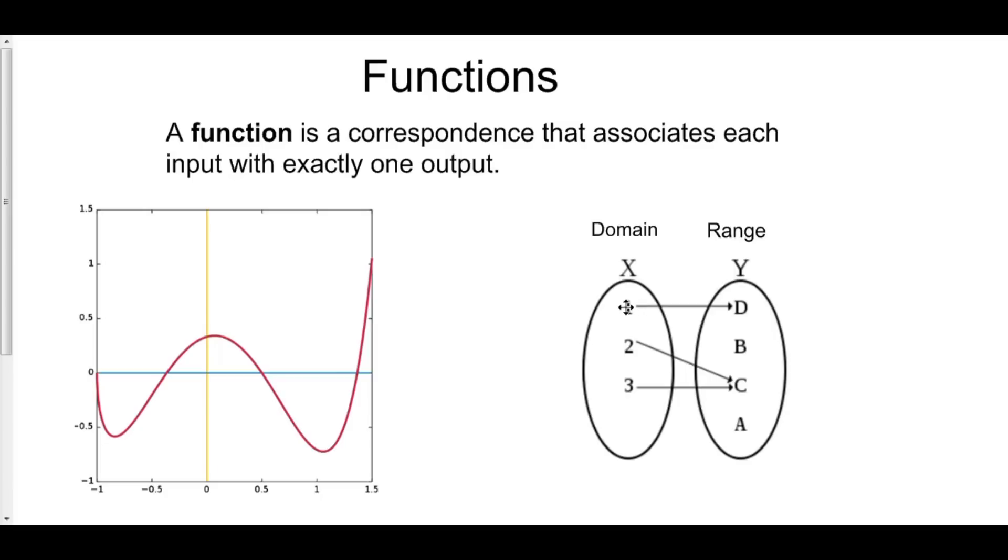Each input corresponds to only one output. Now it is possible for two inputs to yield the same output. That actually happens over here in this graph. Consider that our inputs are x. So here's an input and here's an input right here. We have about negative point five and about point five. However, they both yield the same output, which is zero. And the same goes for about one point four. That also yields zero. So each of these inputs are yielding one output, but the same output.